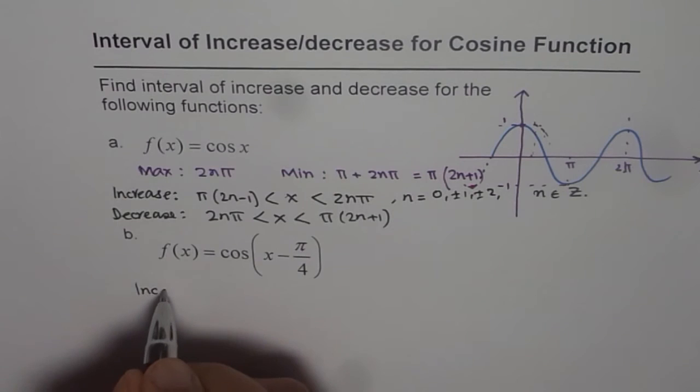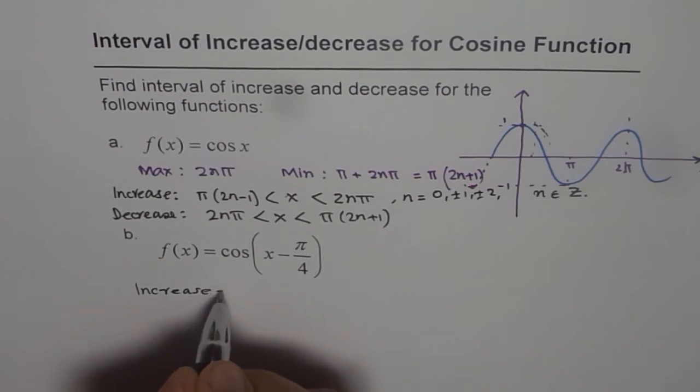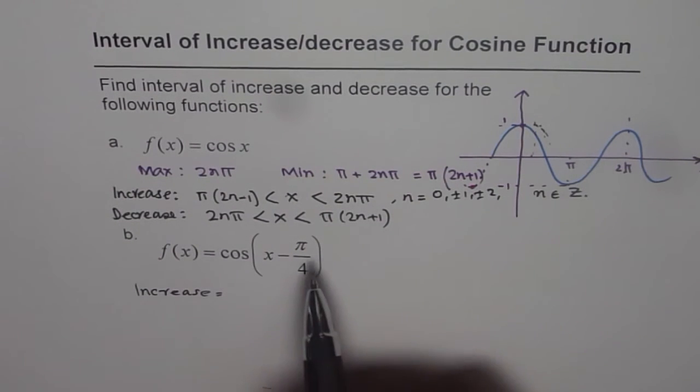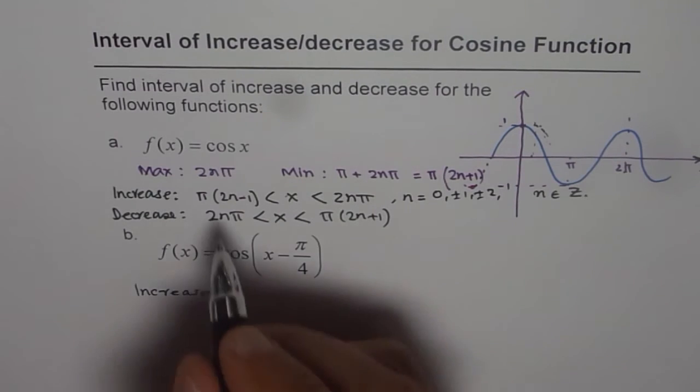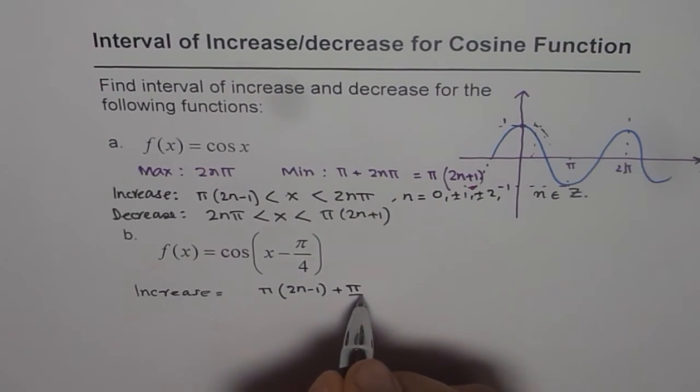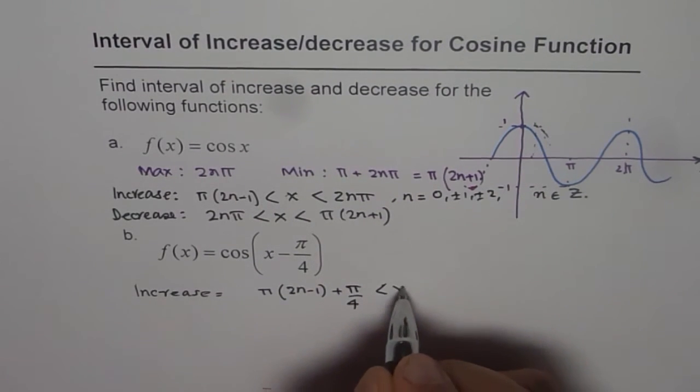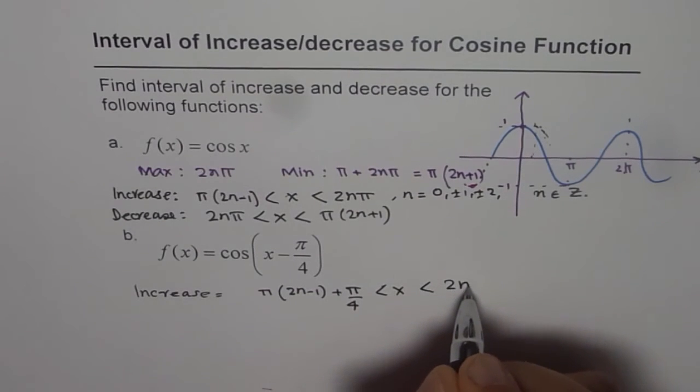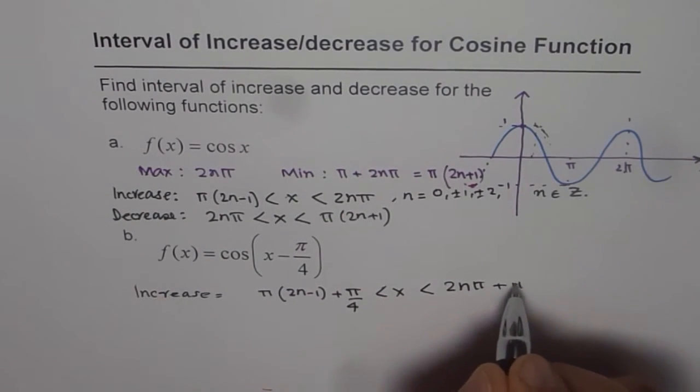And therefore, in this case, interval of increase should be how much? You have to add pi by 4 to your answer. Do you see that? So the same thing, but you can say pi times 2n minus 1 plus pi by 4, x less than 2n pi plus pi by 4.